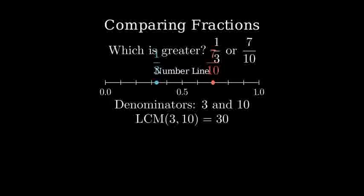Let's convert one-third to an equivalent fraction with denominator 30. We multiply both top and bottom by 10. This gives us ten-thirtieths.